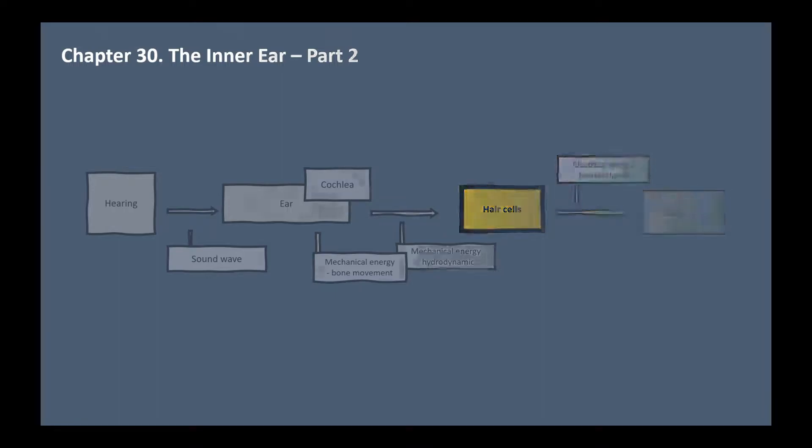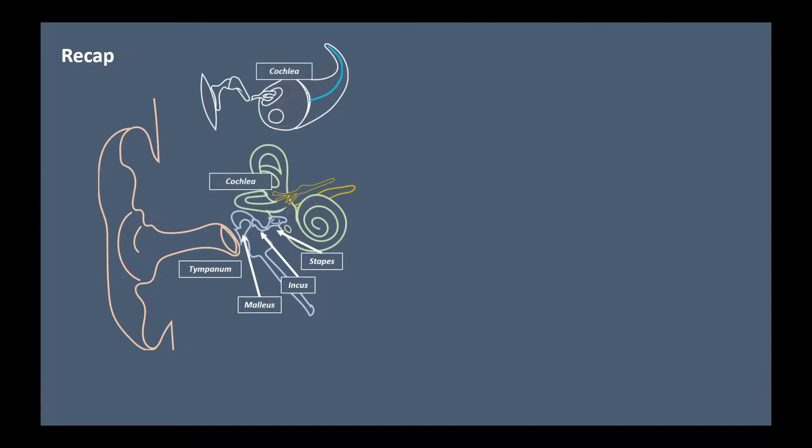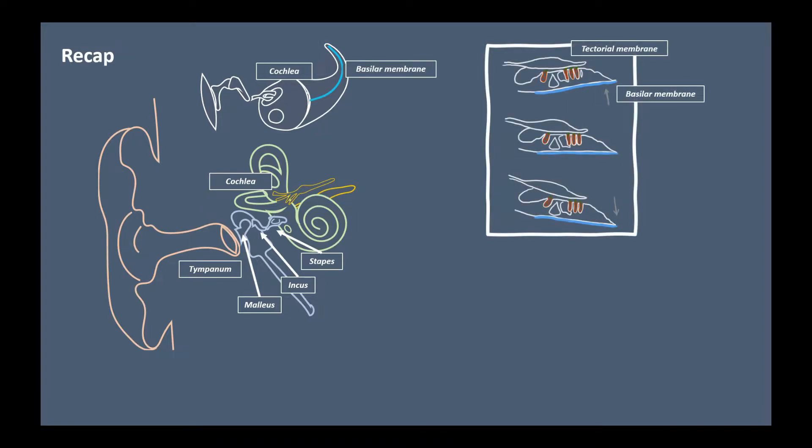I'll briefly recap part 1. The sound is captured by the external ear and hits the tympanum. Here the sound wave is transformed into the tympanum's vibration and transmitted by three small bones: malleus, incus, stapes. The movement of the stapes oscillates the liquid of the cochlea. The oscillation of the liquid causes the movement of the basilar membrane, the shearing movement of the basilar membrane and tectorial membrane causes the deflection of the hair bundle of the hair cells.